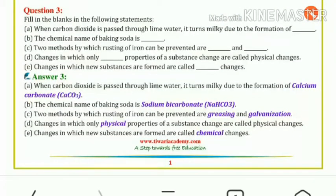Question 3: Fill in the blanks. When carbon dioxide is passed through lime water, it turns milky due to the formation of calcium carbonate. Lime water is CaO (calcium oxide), and when CO2 (carbon dioxide) is passed through it, calcium carbonate forms, making it milky.